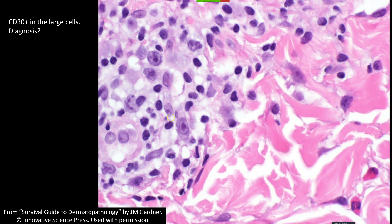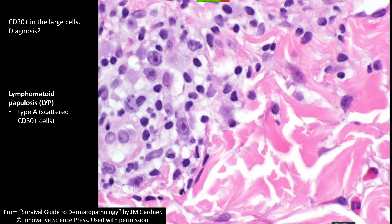What we're seeing is scattered large cells plus a mixed inflammatory background, often with eosinophils — that's classic. CD30 is going to be positive in these big cells. When you put all that together with the clinical history, this is lymphomatoid papulosis. Some people like to subtype it by letter, but it started with A, B, and C and now we're at D, E, F — we'll get to Z eventually and then start using Greek letters because there's so much alphabet soup.